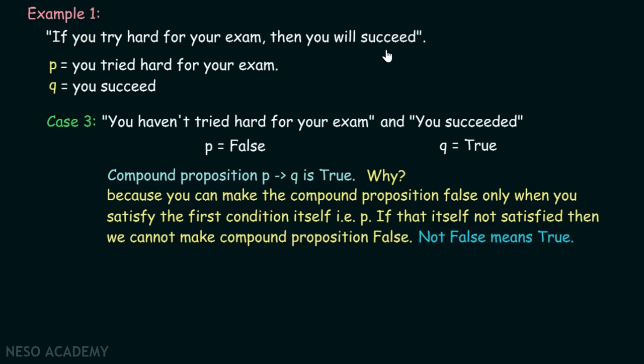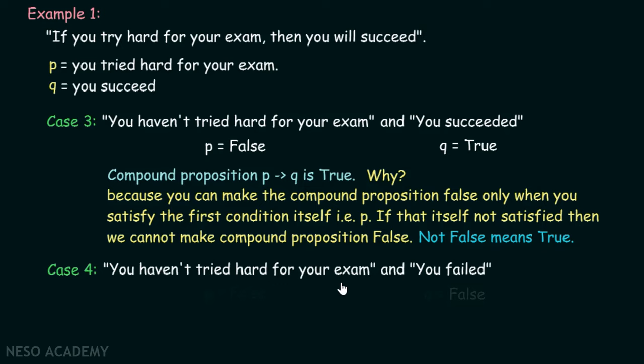Case four: you haven't tried hard for your exam and you failed. P is false and Q is false. Because P is false, we cannot make this proposition false. This proposition can only be made false when you tried hard and eventually failed. Since you haven't tried hard, you are out of this statement and cannot make it false — so this compound proposition is true.